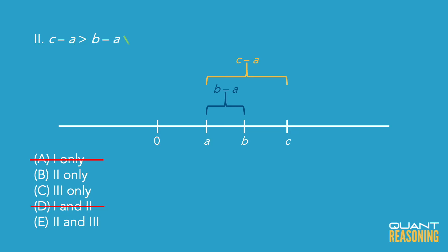So now we can eliminate answer choice C because it doesn't include the second Roman numeral. We're down to B and E depending on that third Roman numeral.